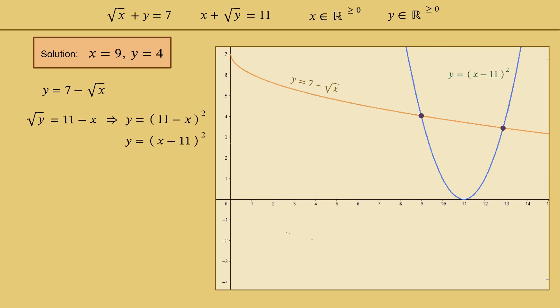However, if we consider another equation, square root of y equals x minus 11, and take the square of it, we get exactly the same equation as before. This means that the blue graph is actually a union of two graphs, corresponding to equation A and equation B. So we need to filter out the irrelevant points, corresponding to equation B but not to equation A.